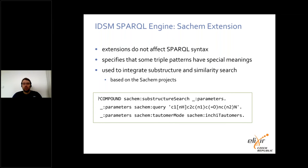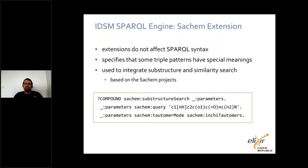We took advantage of the fact that PostgreSQL supports custom database extensions, so we designed our engine to be able to employ these extensions. This allows us to integrate substructure and similarity search based on our former SeiChem project. Most importantly, we added support for this extension without changing the SPARQL syntax, which is very important for compatibility with other tools. Our engine interprets a specific set of triples as an extension — for example, to search all compounds that contain guanine tautomers as their substructures.